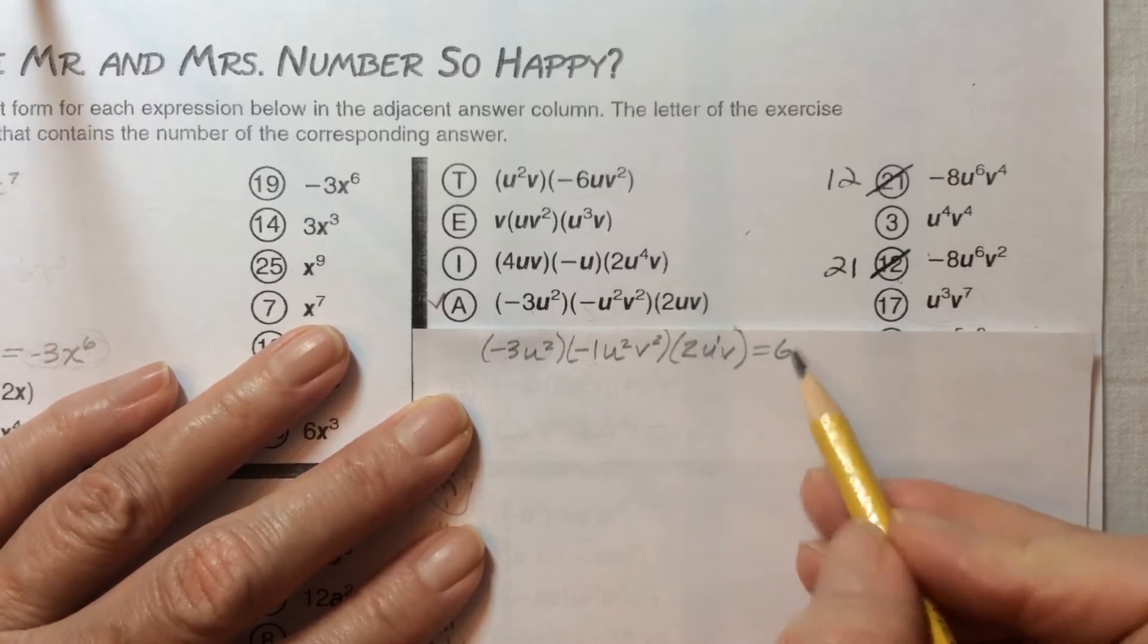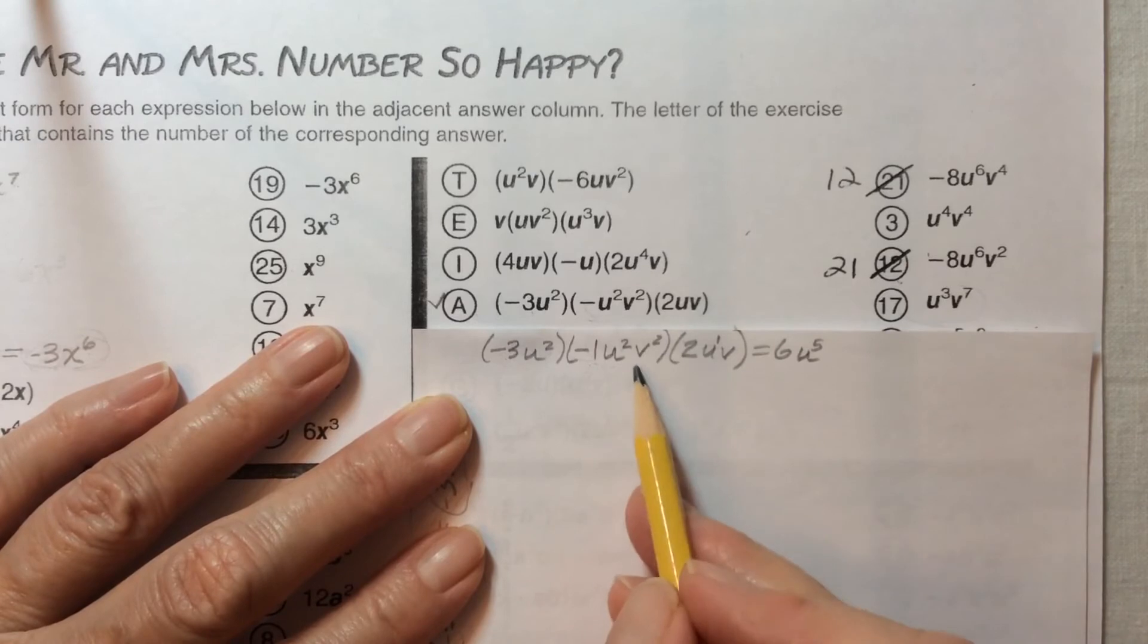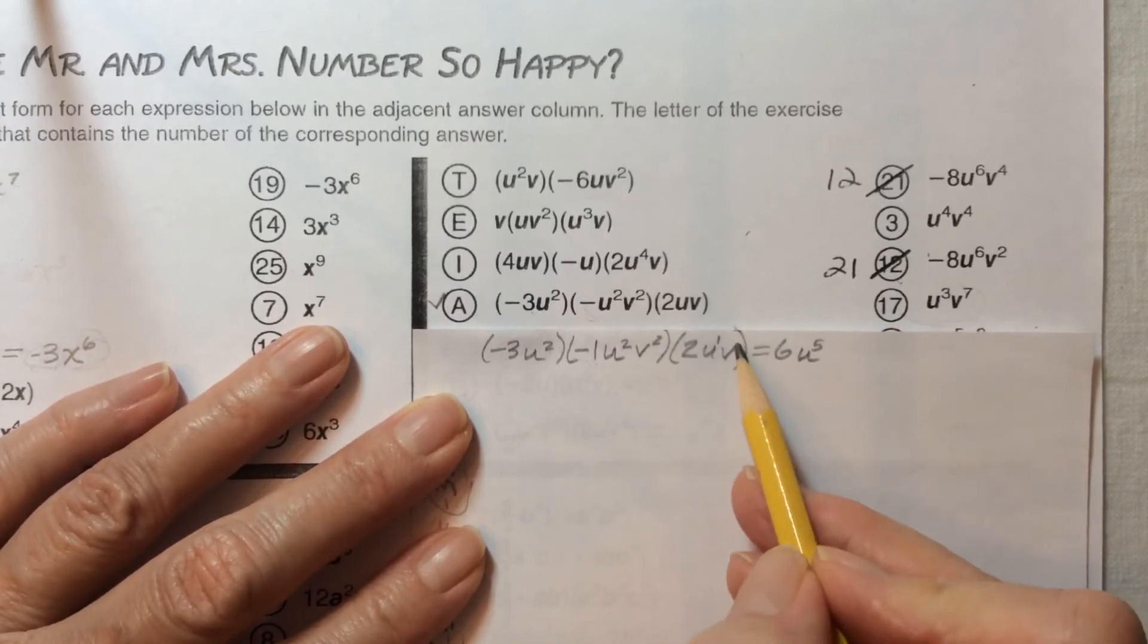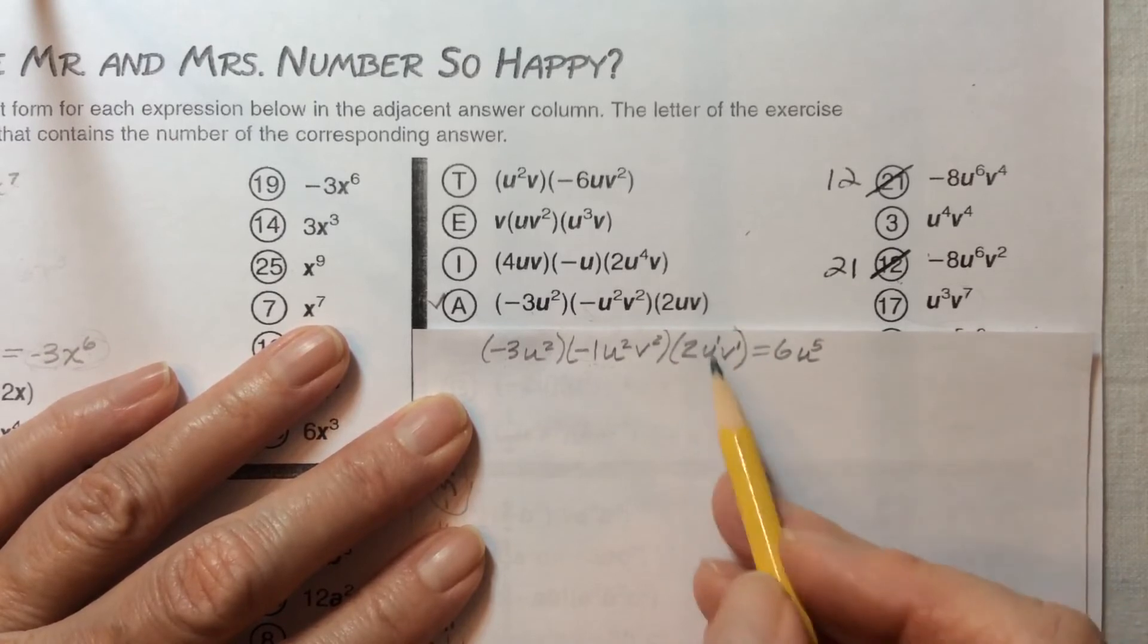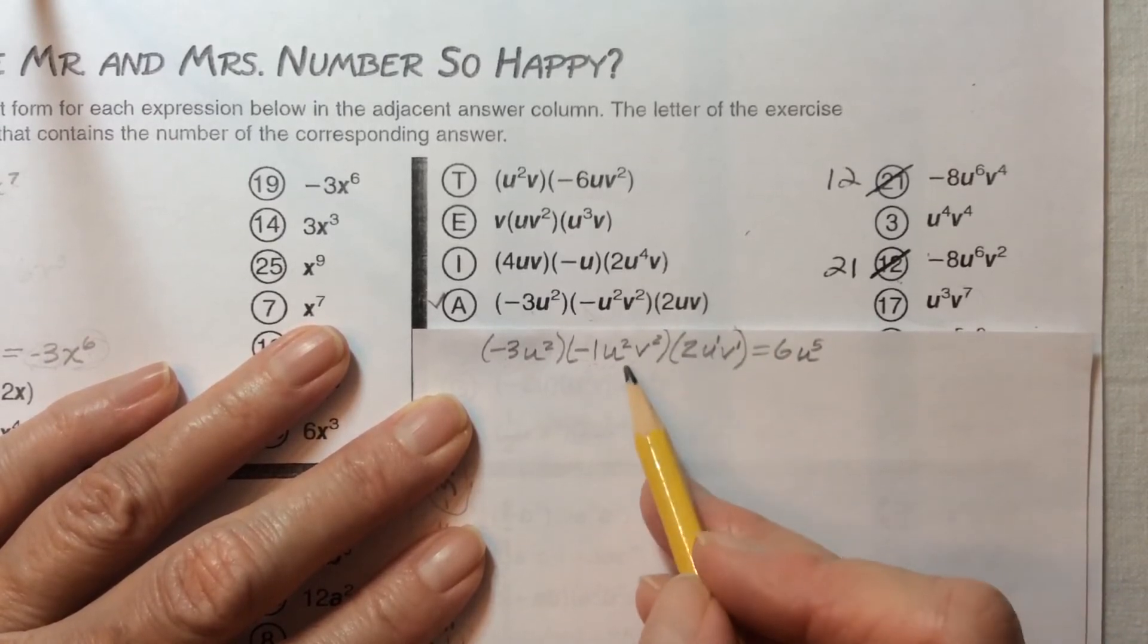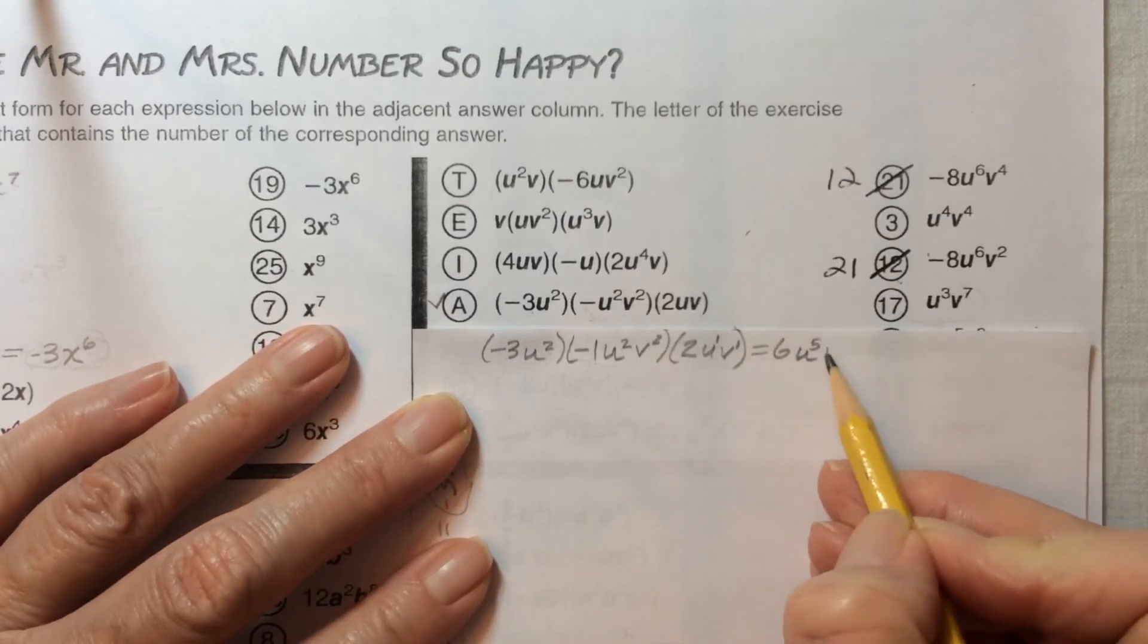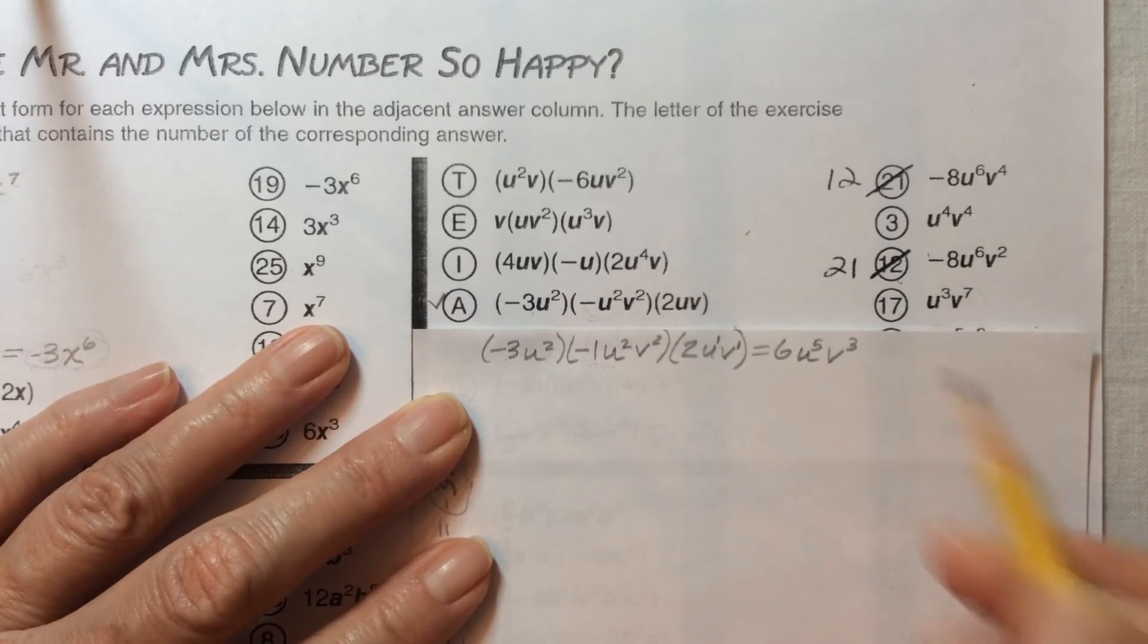And then for v, we have v to the second power and just plain v, which is v to the first power. We can add together the 2 and the 1 exponents on the v and get v to the third power. So that's what we get using our shortcut rules.